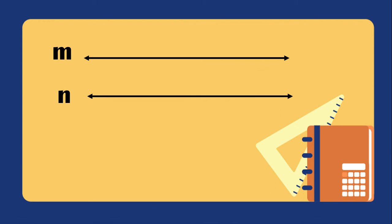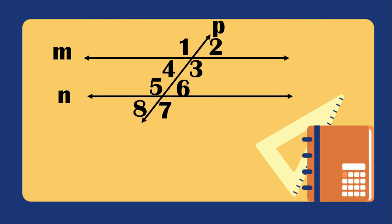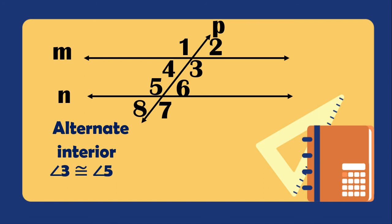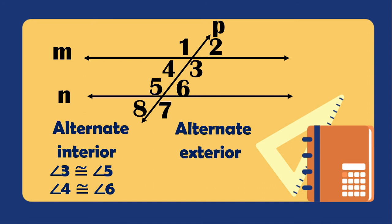Using lines M and N cut by transversal P creating eight angles: alternate interior angles are angle 3 ≅ angle 5 and angle 4 ≅ angle 6. Alternate exterior angles are angle 1 ≅ angle 7 and angle 2 ≅ angle 8. Alternate means they are on different sides; interior means inside, exterior means outside.